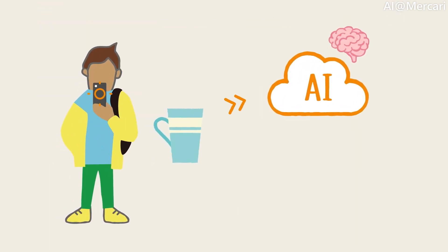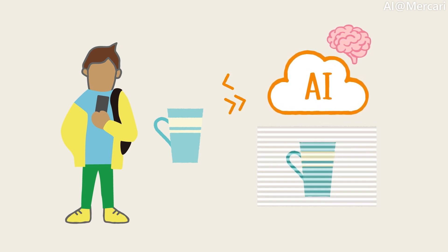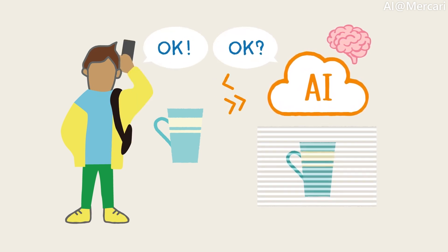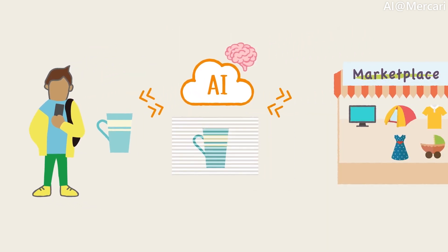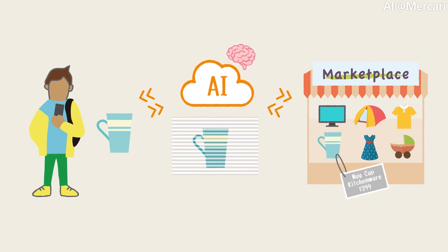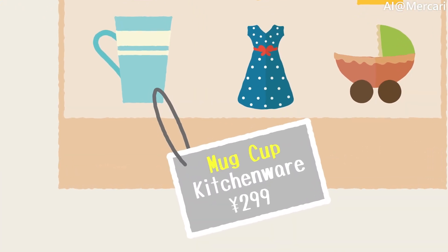For example, let's say you take a picture of a mug and upload it on Mercari. Mercari will then send the photo to the server and fill the item name as Mug Cup, categorize the photo as kitchenware, and set the suggested price as 299 yen.